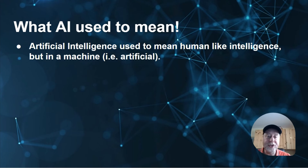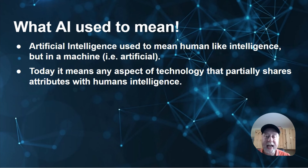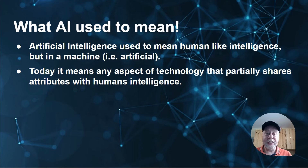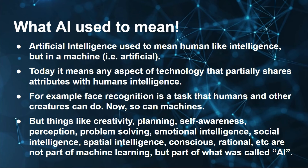What AI used to mean was artificial intelligence — human-like intelligence in a machine. Today it means any aspect of technology that partially shares attributes with human intelligence. Very narrow AI is really machine learning: recognizing a face, reading a license plate. But what AI meant 10 to 20 years ago was human-level intelligence in a machine — requiring creativity, planning, self-awareness, perception, problem solving, emotional intelligence, and more. That has now become a marketing term.